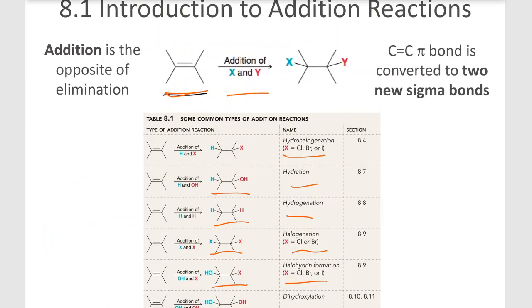So again, we're converting this carbon-carbon pi bond to two new sigma bonds. So we're taking this pi bond here and we're converting it to two new sigma bonds to add X and Y.